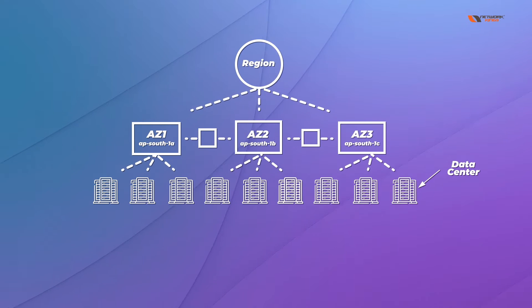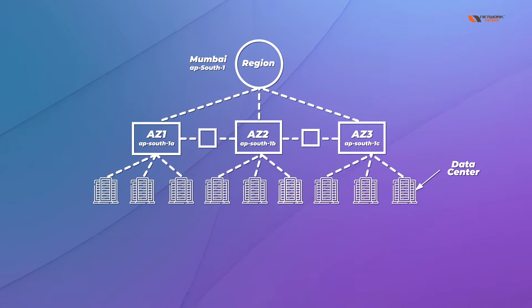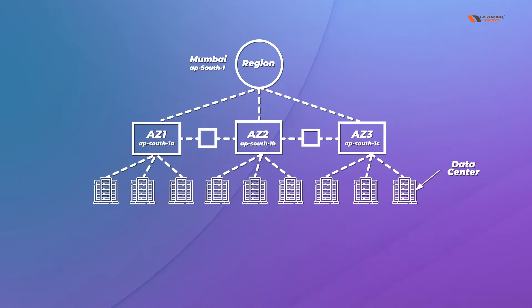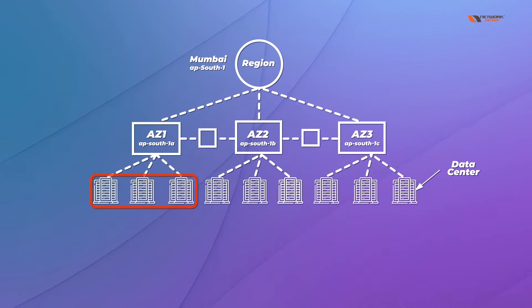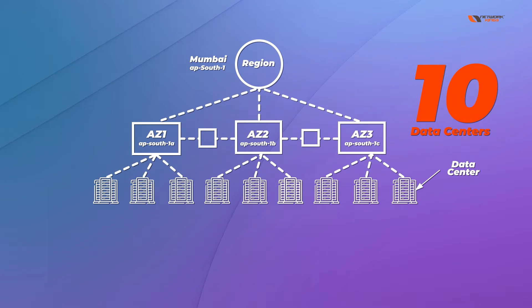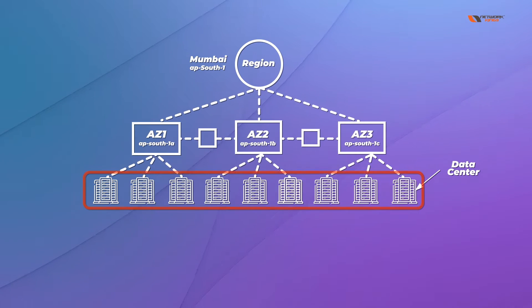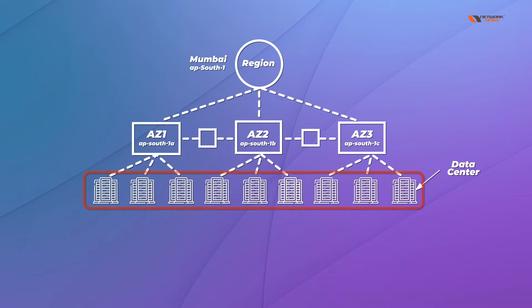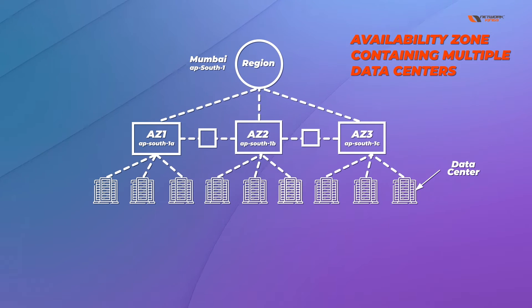Let's take the example of the Mumbai region. This is the Mumbai region and its name is ap-south-1. In this region, you have three availability zones: AZ1, AZ2, AZ3, with codes ap-south-1a, 1b, and 1c. These are data centers within availability zones. You can have 10, 20, or 30 data centers in an AZ — that figure is not shared publicly. Every availability zone contains a group of logical data centers, and every data center has multiple servers.